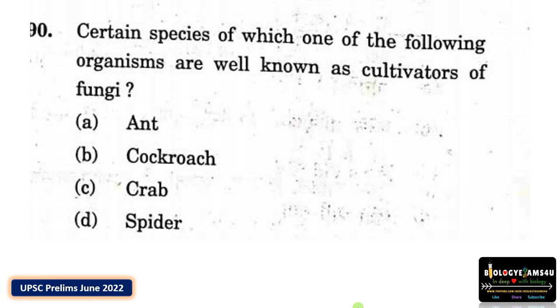Certain species of which one of the following organisms are well known as cultivators of fungi? Options are A ants, B cockroach, C crab, D spider.